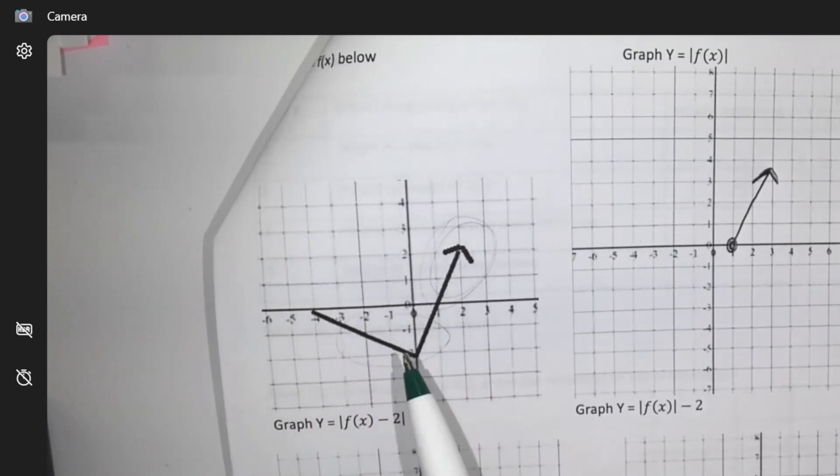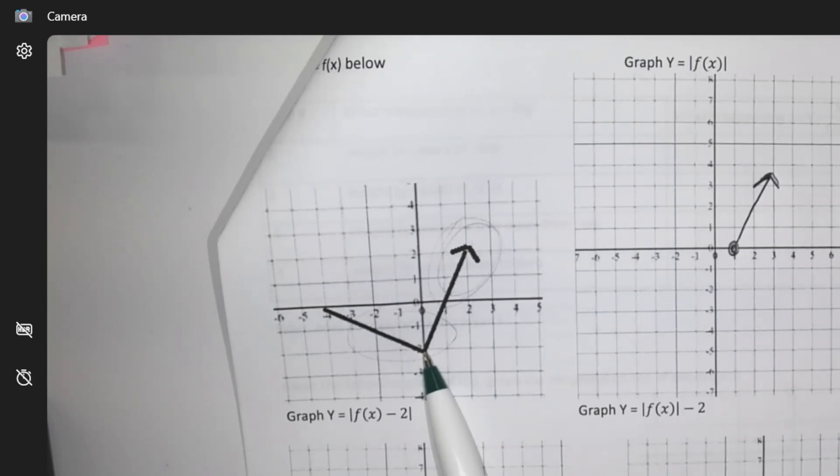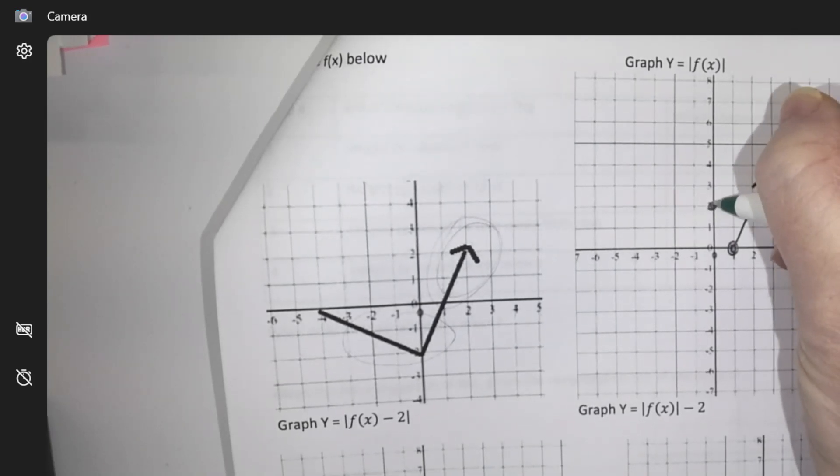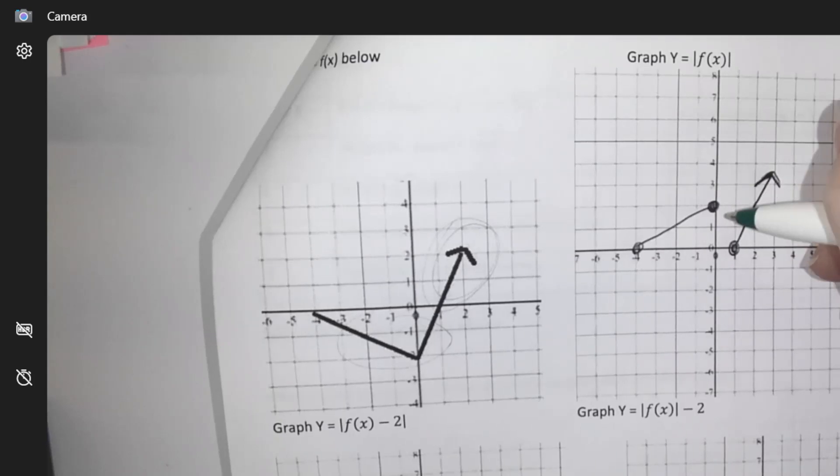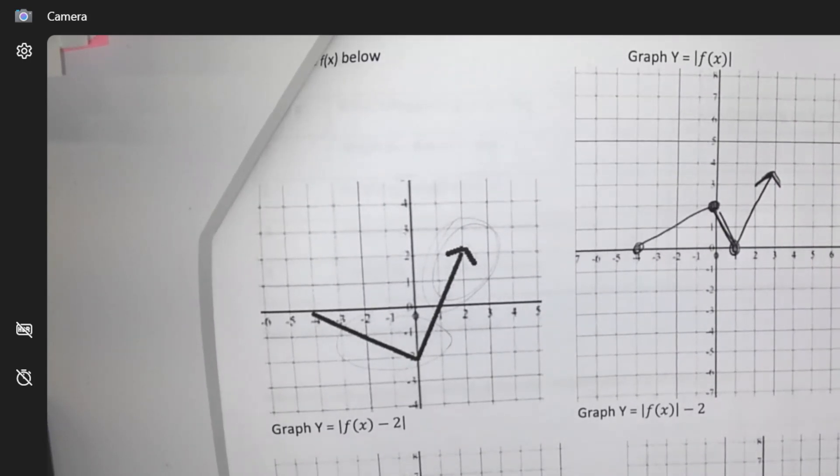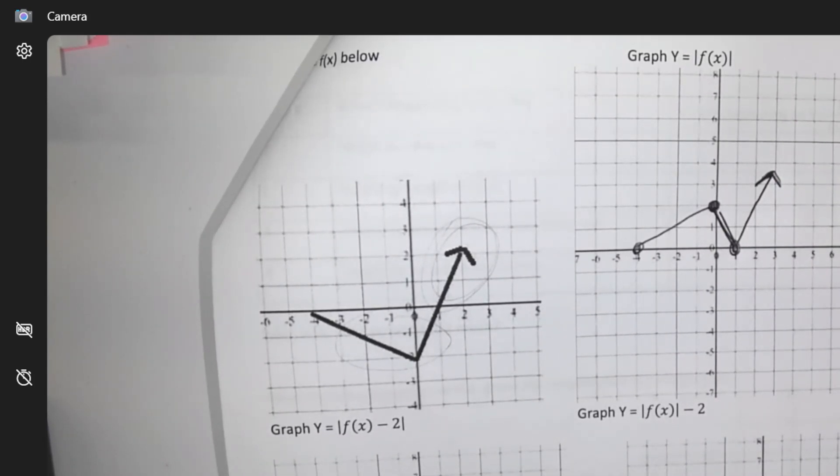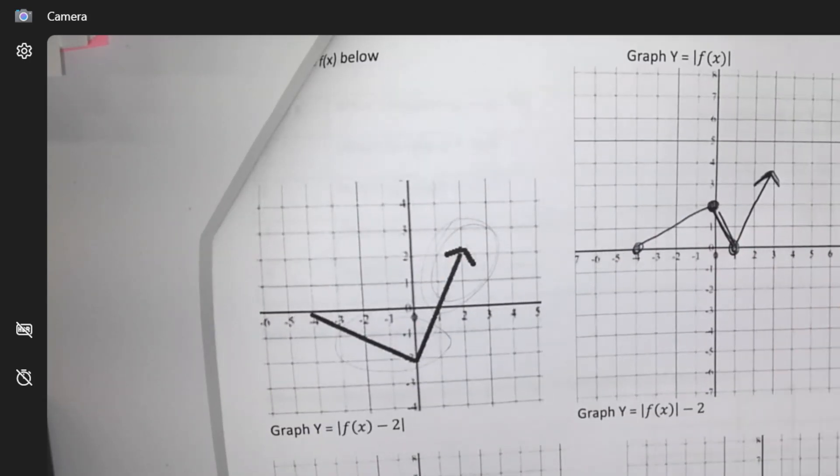So for instance, here's this coordinate right here, 0, negative 2. So I'm going to change it to be 0, positive 2. So that's the absolute value of it.